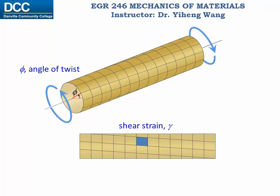If you recall, in an earlier video we mentioned the angle of twist, which is the clear indication of the deformation of a shaft under applied torques. How do we determine this angle of twist?